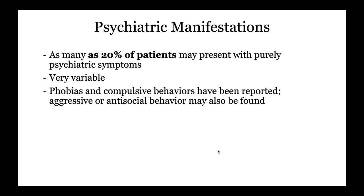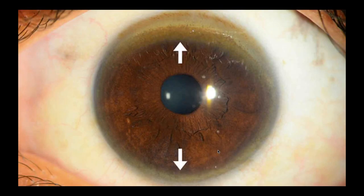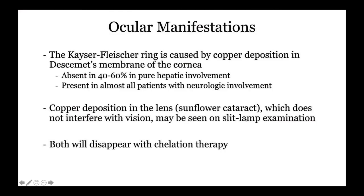Psychiatric manifestations occur in up to 20% of patients; some may present with purely psychiatric manifestations — very variable, including phobias, compulsive behaviors, acute psychiatric illness, mania, or aggressive behavior. Kaiser-Fleischer rings are deposits of copper in the cornea — mainly on the superior and inferior aspects rather than lateral aspects — in Descemet's membrane. They are absent in about 60% of patients with purely hepatic involvement but are really present mainly in neurologic disease. Copper may also deposit in the lens causing sunflower cataracts. Both disappear with chelation therapy.